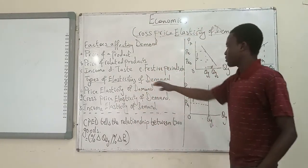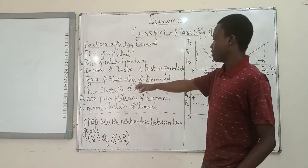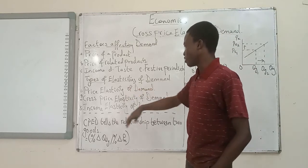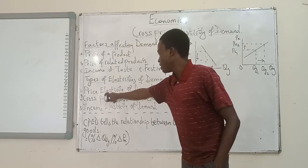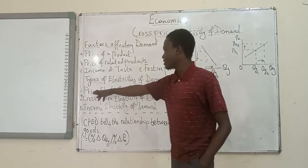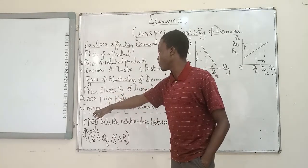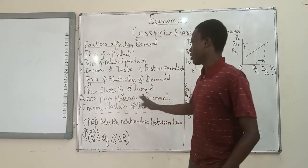Now, the types of elasticity of demand: we have Price Elasticity of Demand, which is PED; we have Cross Price Elasticity of Demand, which is CPED — that is what we are talking about in this video; and Income Elasticity of Demand.